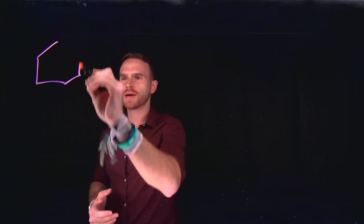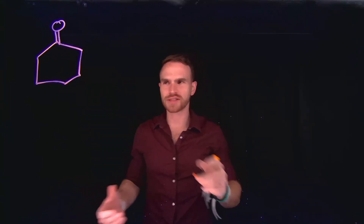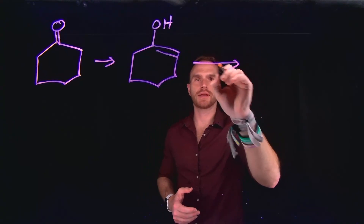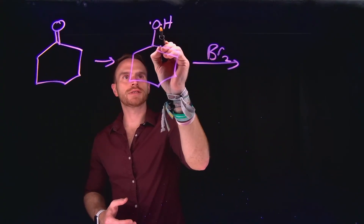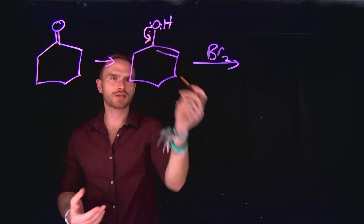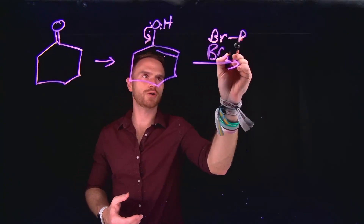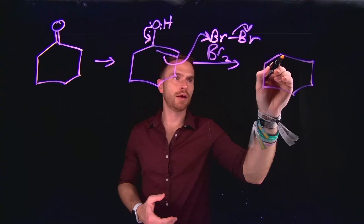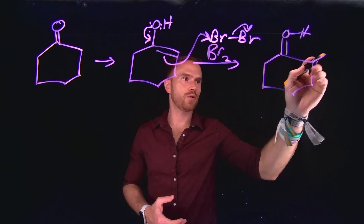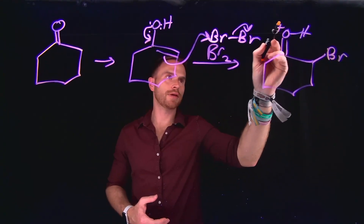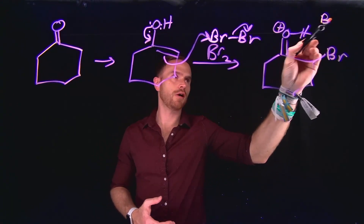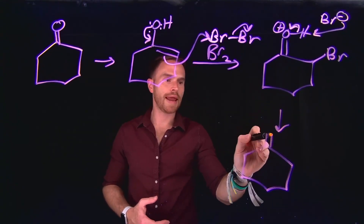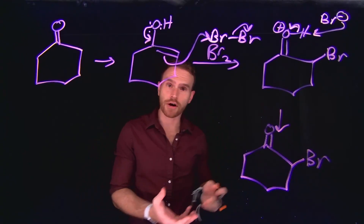If we form an enol of a compound and add Br2 (bromine gas), the electrons from the oxygen can come down to reform the carbon-oxygen double bond, and the pi bond will attack the electrophilic bromine, allowing us to do alpha-halogenation. In this process, we form a brand new carbon-to-bromine bond, and then since the oxygen is positively charged, the bromide ion that was kicked off could come and abstract the hydrogen, allowing us to create a neutral species — our desired product where we've generated the new carbon-to-bromine bond. This is called alpha-halogenation.